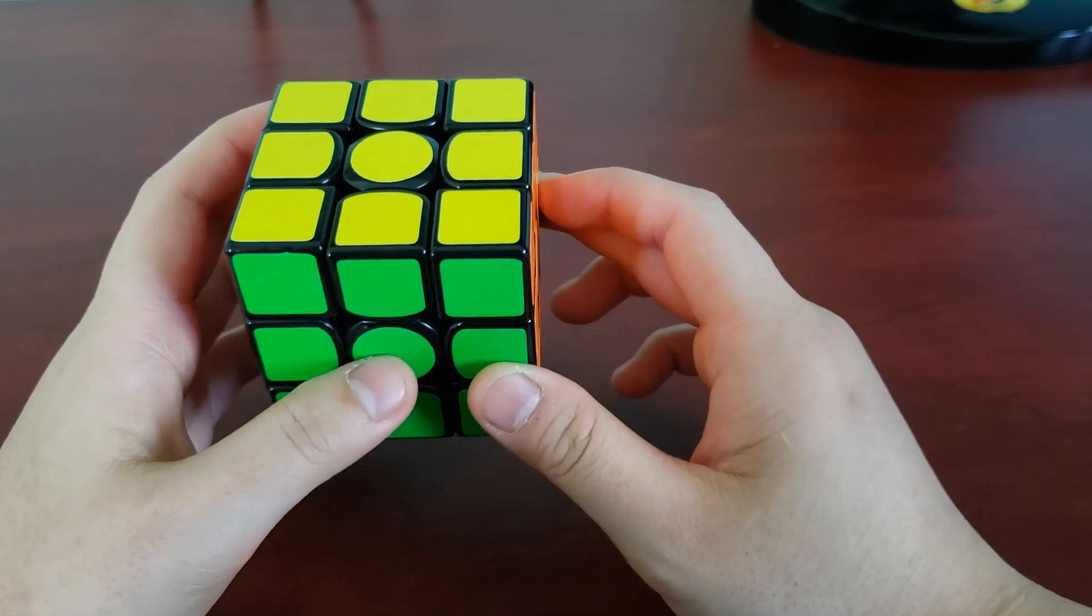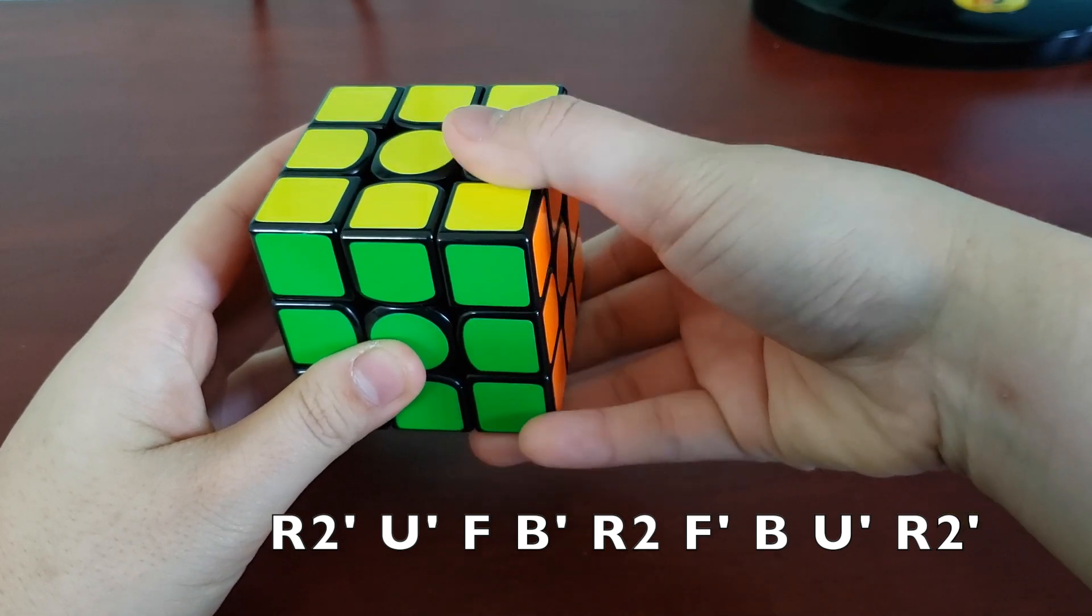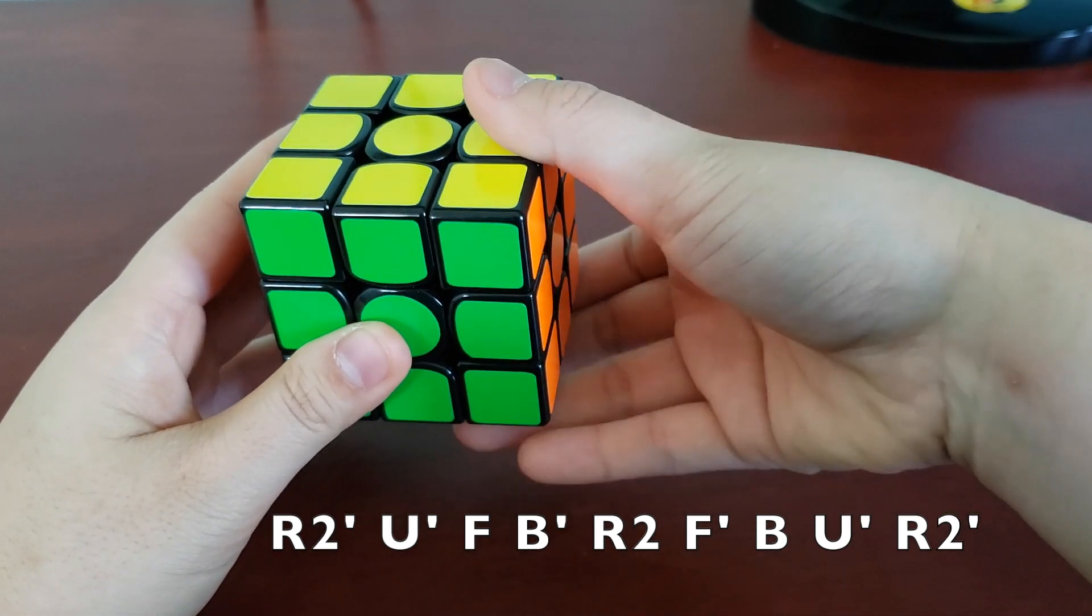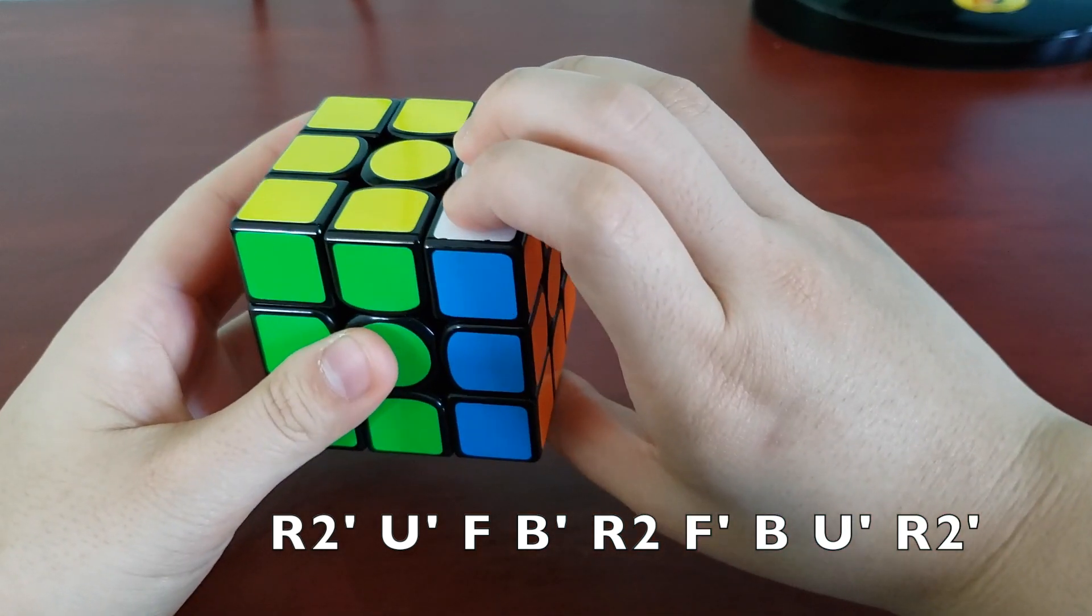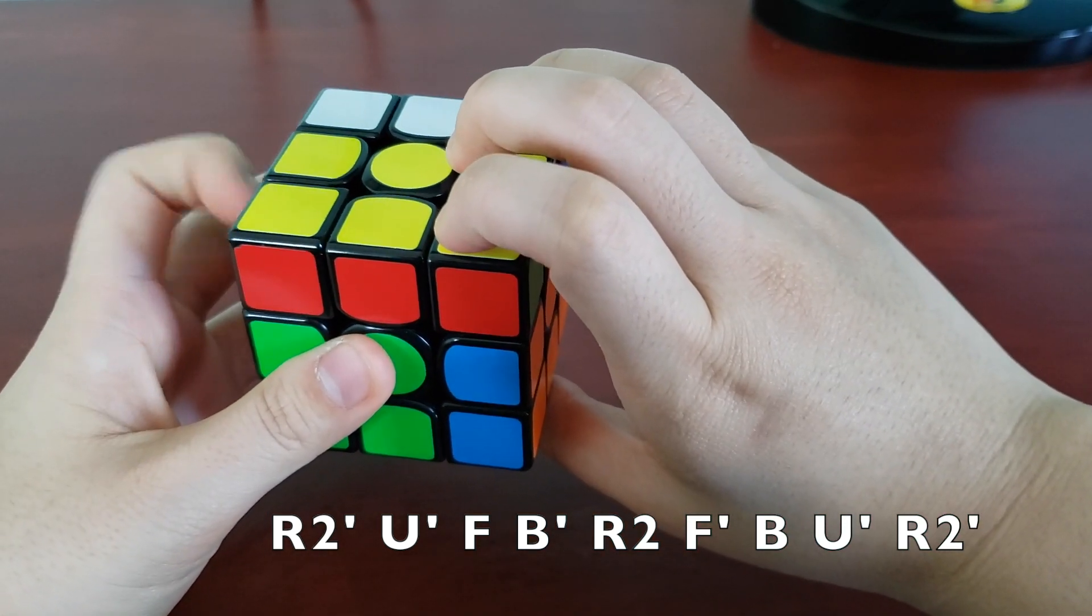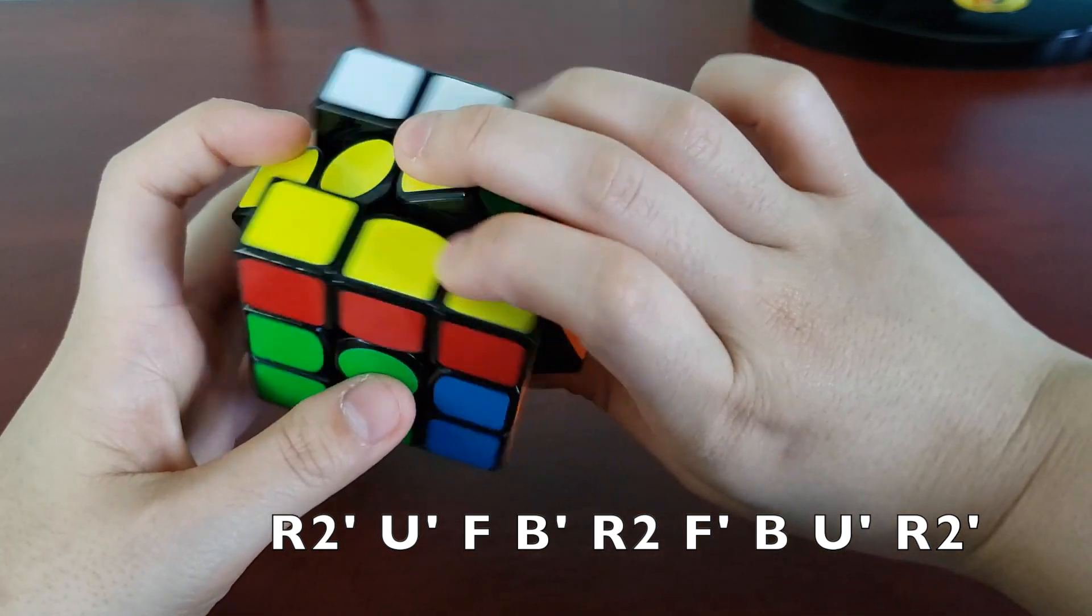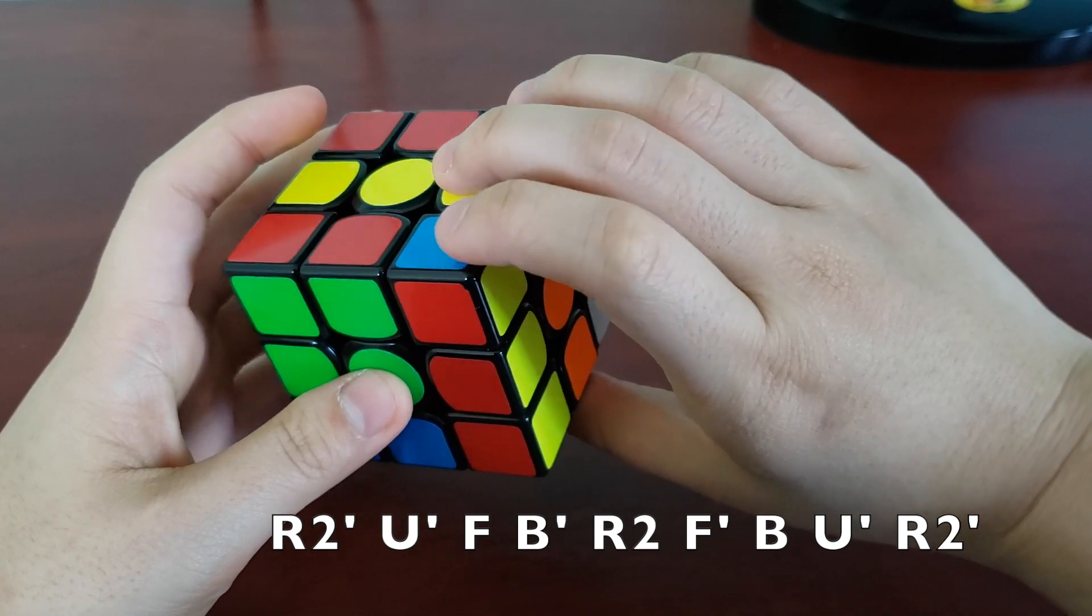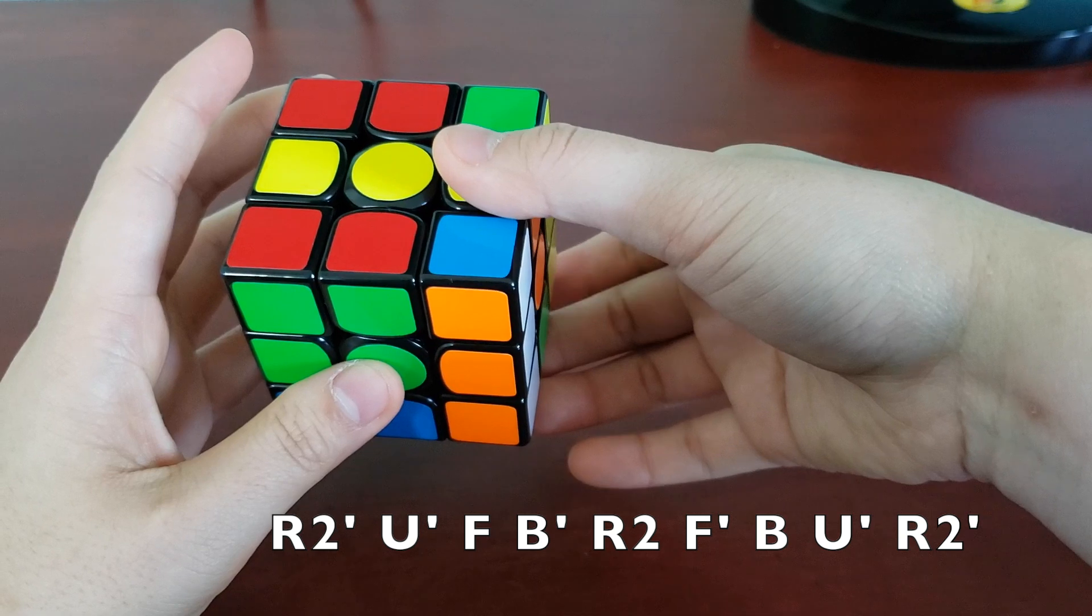Alright, let's break it down. So first it starts with an R2 prime and I do this by re-gripping with my thumb on the U layer and the rest of my hand on the D layer. So R2 prime, U prime with the left index finger, and then I do the F and B prime together with my right index and ring finger. And then I do an R2, which is really nice from this position, with the right hand.